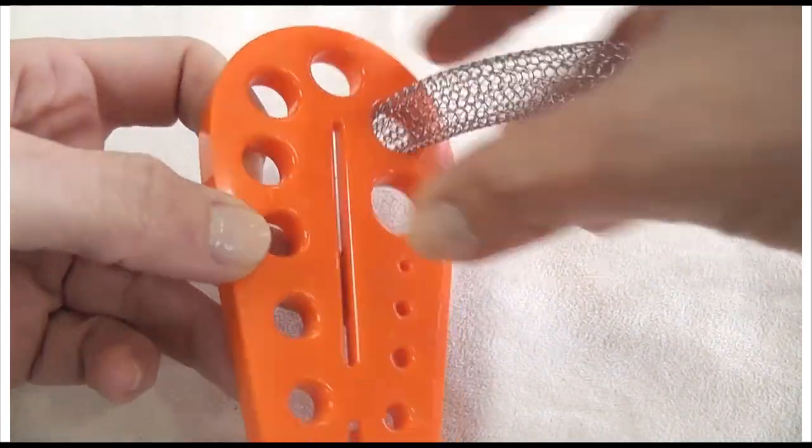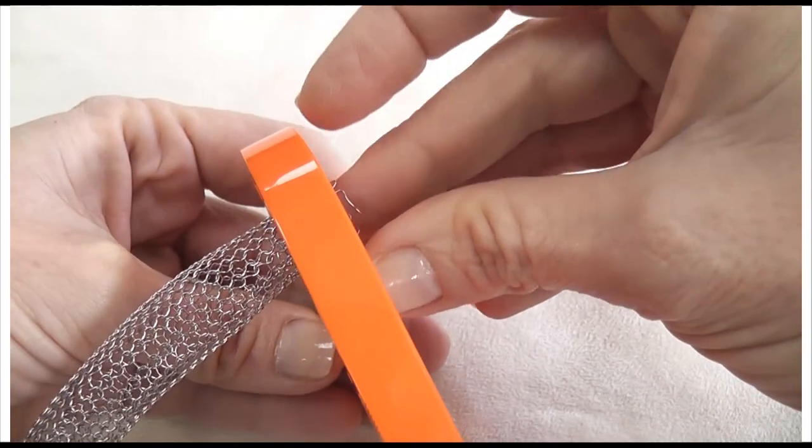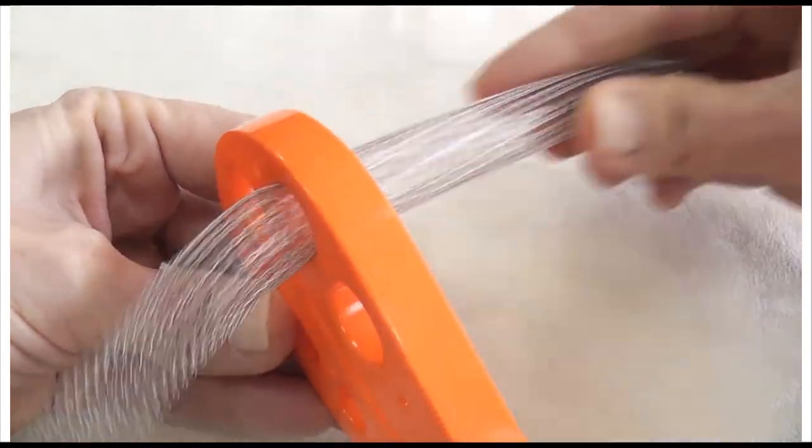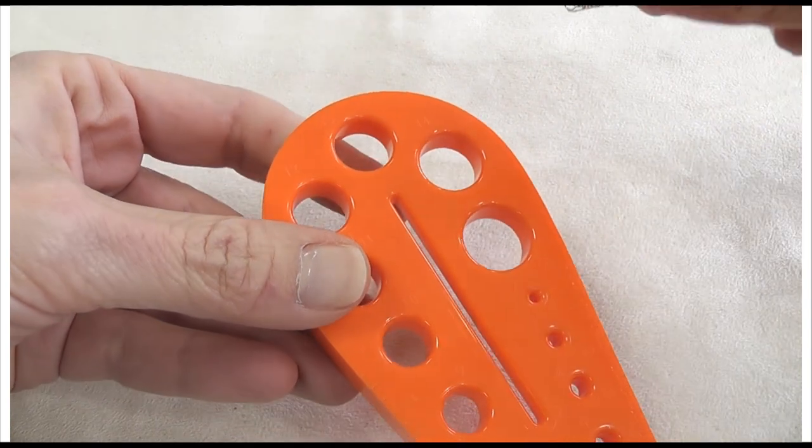You begin from the relatively large holes, pulling your knitted tube through them, going into smaller and smaller holes.